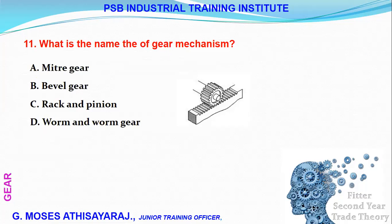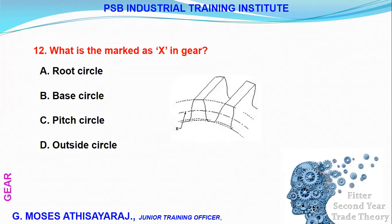What is the name of the gear mechanism that uses a pinion wheel? If we have a rack and pinion arrangement with 30 teeth on the gear circle, we refer to this as a rack and pinion mechanism.